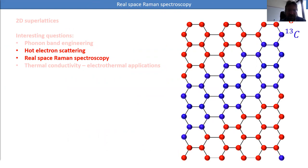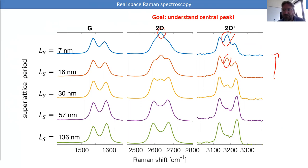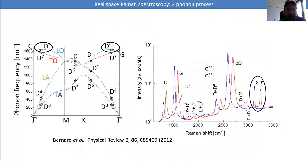Now let's move to hot electrons and real space Raman spectroscopy. The goal is to understand the additional central peak appearing when you decrease the superlattice period. There is a very different behavior between the 2D prime, 2D, and G peaks. The 2D and 2D prime show a central peak, but not the G peak — and we'll try to understand what's actually going on.